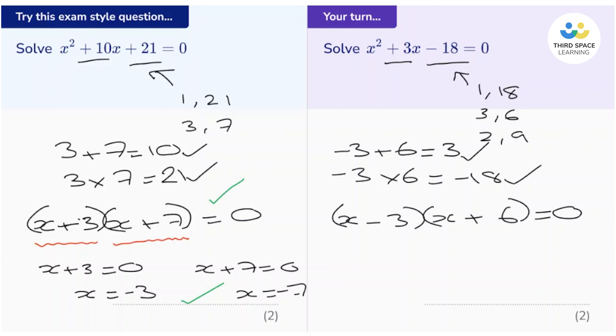Now, because we have two terms multiplied together to give 0, this one and this one, that means that one of them must be 0. So either x take away 3 equals 0, in which case x is positive 3, or x add 6 equals 0, in which case x equals negative 6.